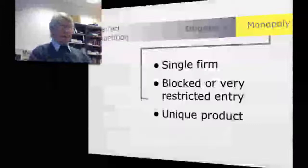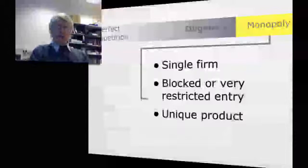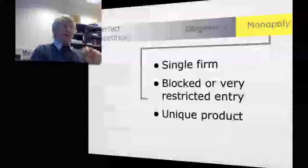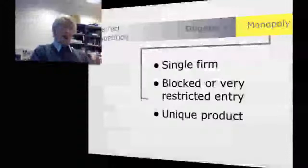Now of course, that leaves the notion that the firm produces a unique product. It's only that firm that can produce the product. Now the unique product might come about for legal reasons, patent for example. The firm might have a patent on a product which would mean that other firms could not produce that. This is something to bear in mind when you're looking at the drugs market. The drugs market is a market where each firm who develops a new drug immediately patents that drug to ensure they can stop the competition from stealing their invention.